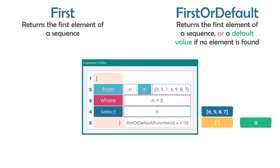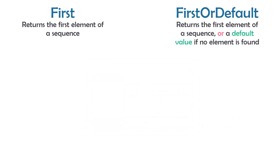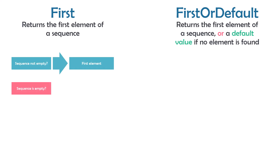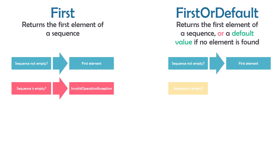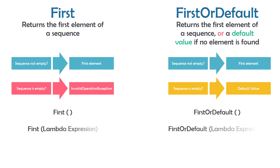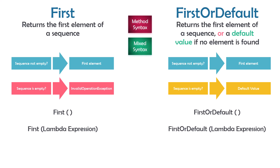To summarize both operators: both return the first element from a sequence. For the First operator, if the sequence is not empty you get the first element, but if it is empty an InvalidOperationException is thrown. For FirstOrDefault, if the sequence is not empty you get the first element, and if it is empty you get the default value, which depends on the data type - for integer it's zero, for boolean it's false, and so on. To use these operators you have two ways: either with empty brackets or with a lambda expression. Both operators can be used at any point in the query but only as a method, so in method syntax or mixed syntax.